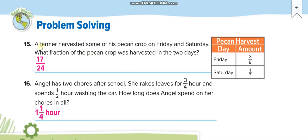Word problem: a farmer harvested some of his pecan crop on Friday and Saturday. What fraction of the pecan crop was harvested in the two days? You have to add them — make the denominator the same. The LCM of 8 and 3 is 24, then add them.